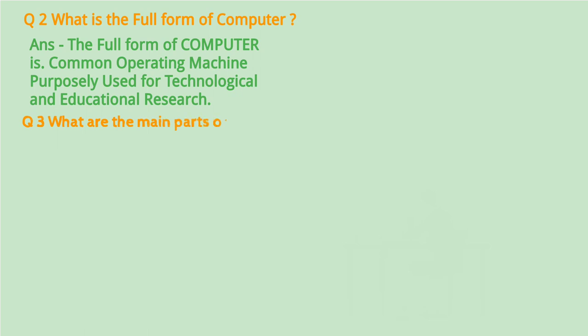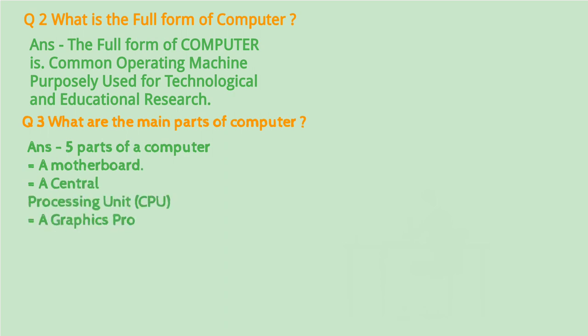Question 3: What are the main parts of computer? Answer: Five main parts of a computer: a motherboard, a central processing unit CPU.